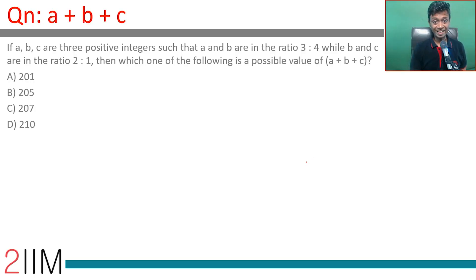a, b, c are three positive integers such that a and b are in the ratio 3:4. We're dealing with positive integers, which makes life very simple.